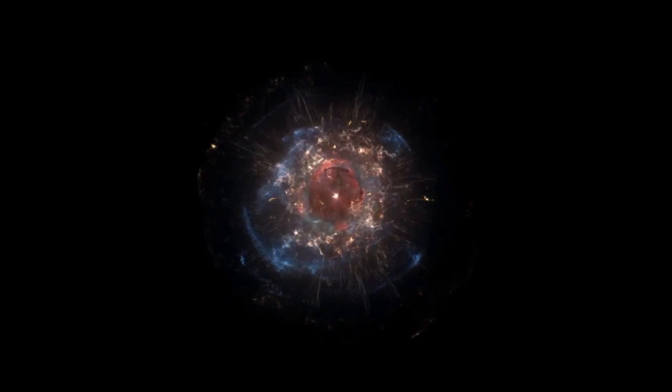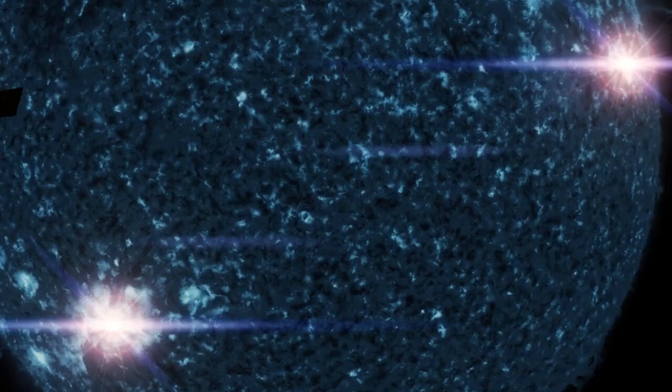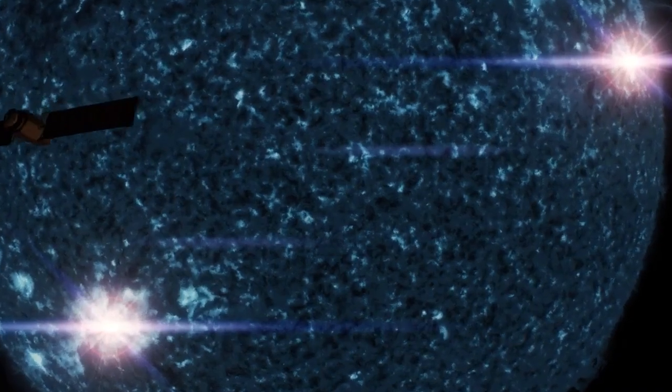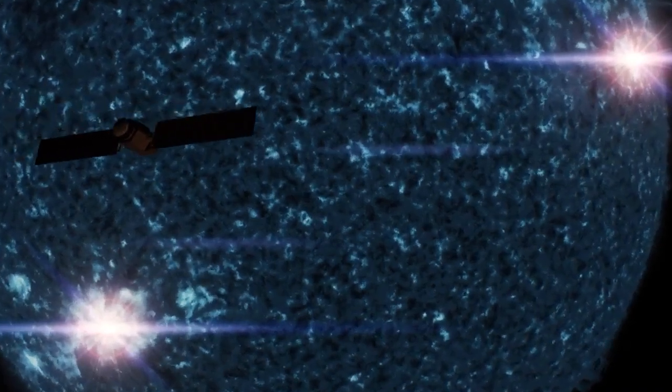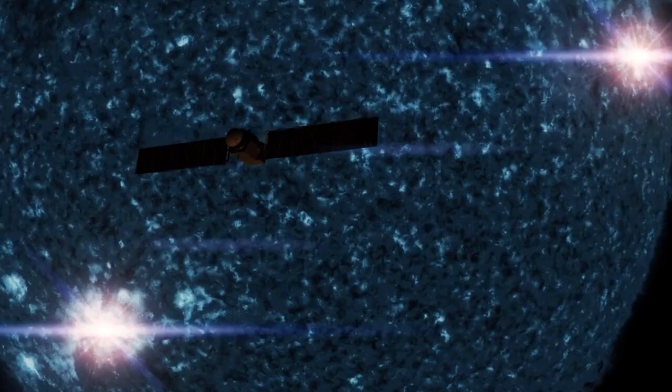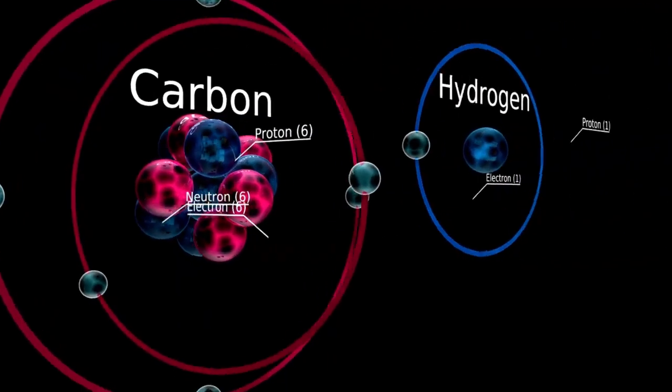This was unusual because stars like Betelgeuse, massive and ancient, are expected to go through periods of variability, but nothing of this magnitude. At first, some speculated that this dimming was merely part of the natural life cycle of a star. However, as time went on, other theories started to surface, each more alarming than the last.